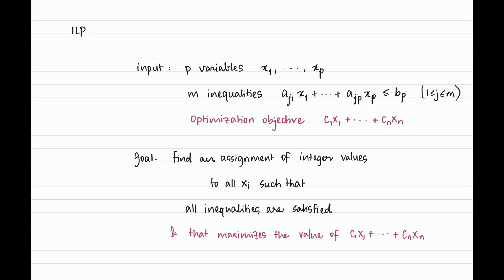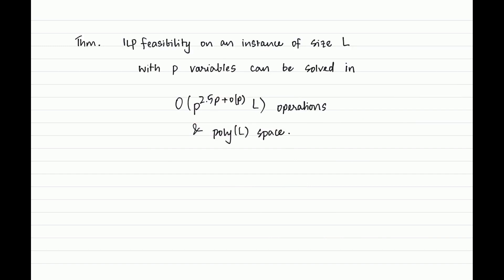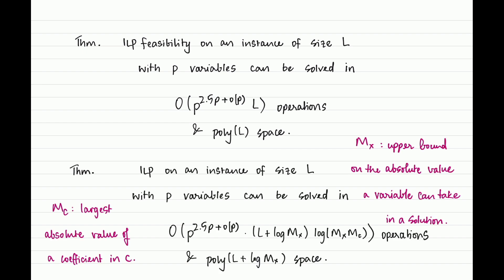One of the reasons ILP works in the context of parameterized algorithms is that both ILP feasibility and ILP admit FPT algorithms where the parameter is the number of variables. This is the cornerstone result all our applications rely on. ILP feasibility has an algorithm that runs in time some function of p — p being the number of variables — with a polynomial overhead in the size of the instance, and it is also a polynomial space algorithm.